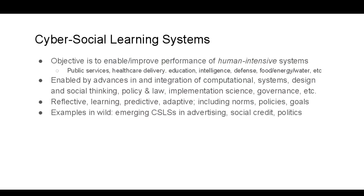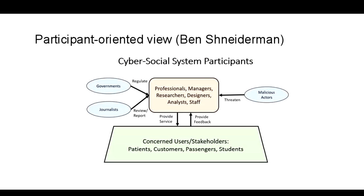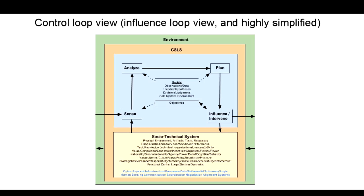This is a chart by Ben Shneiderman. In the green at the bottom, you have the people and the delivery systems you're trying to improve — patients, customers, passengers, students. Above, you have the people who are monitoring, analyzing, and trying to deliver improvements into that system. To the left, you have regulatory agencies and forms of independent oversight. And of course, these systems are often being threatened by malicious actors.